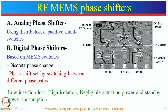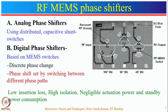This geometry provides an insertion loss of 1.7 dB at Ka-band. These type of phase shifters provide low insertion loss, high isolation, negligible actuation power, and low standby power consumption. These are the advantages of RF-MEMS phase shifters.